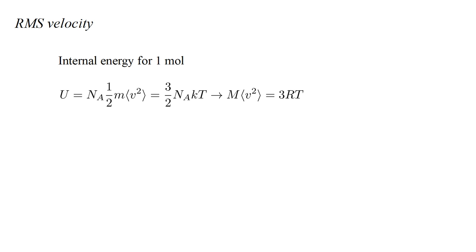Avogadro's number times molecular mass is the molar mass, capital M, and Avogadro's number times Boltzmann's constant is the gas constant, R. Substituting these, and multiplying the previous equation by two, we get big M times mean square velocity equals three R T.